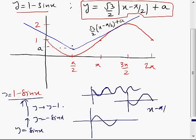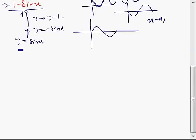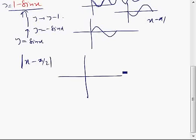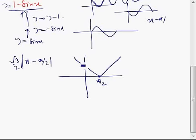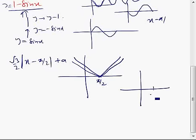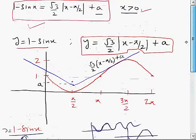The expression mod of x minus pi by two gives a graph whose tip is at pi by two — a triangular shape, which is just a shift of mod x by pi by two units. Now we have a root 3 by 2 factor ahead of it, so you just decrease the slope, and then plus a means shift a units up. So at pi by two, a units up, we have a triangular shape like this.